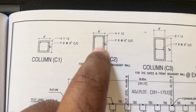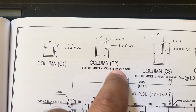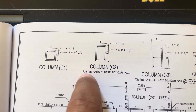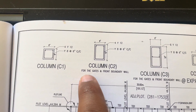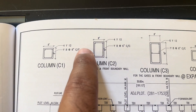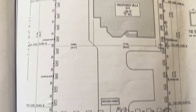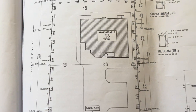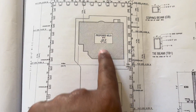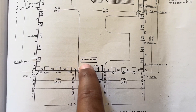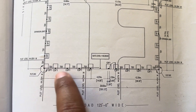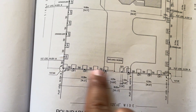Next we have column C2, which is column number 2, used for the gates and front boundary wall. Look at this drawing — this is our villa, this is the front side, here we have one gate and the main gate. So here we will use C2 column for the gates and also for the front boundary wall along this line.